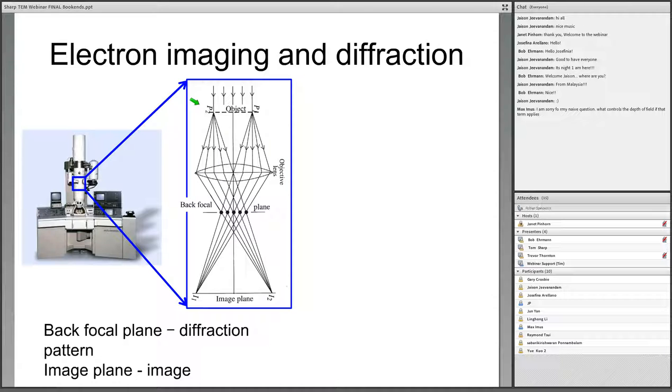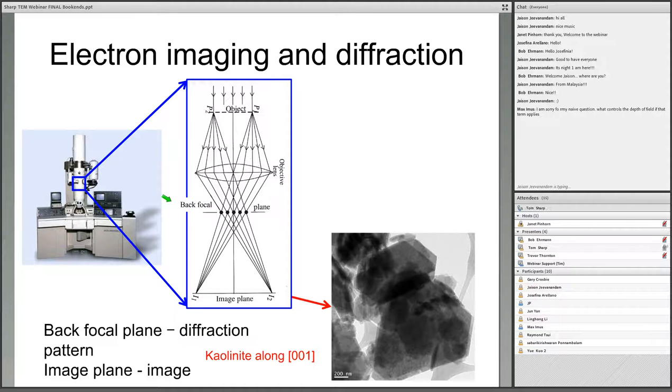The electrons coming through the object are scattered from every point within the object. Those scattered rays are then collected in the objective lens and they're deflected to form an image in the image plane. But the plane where they cross over, right here, this is called the back focal plane. This is where we get diffraction.